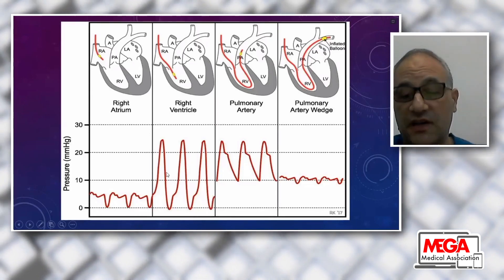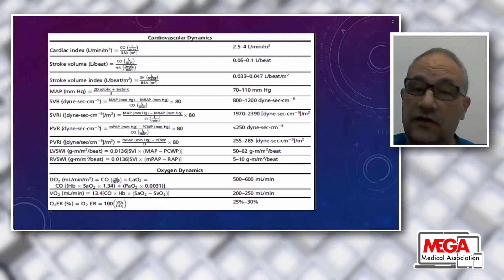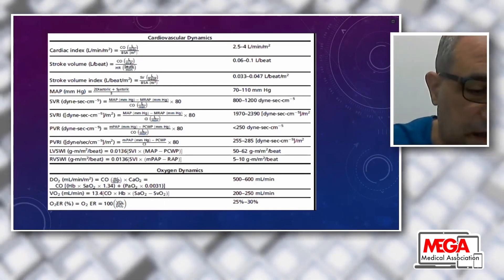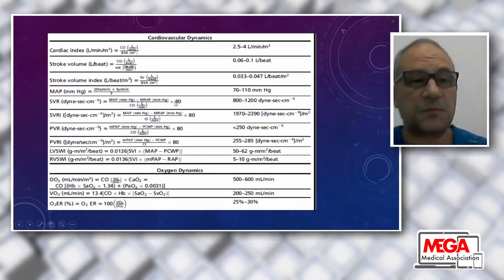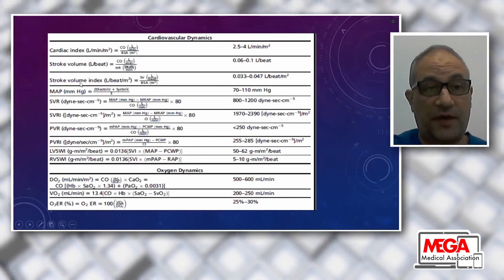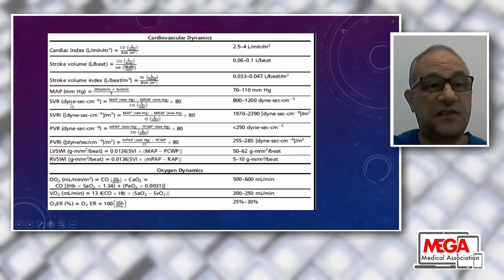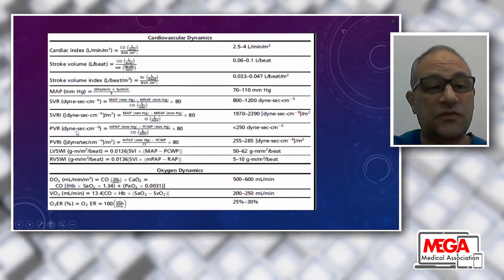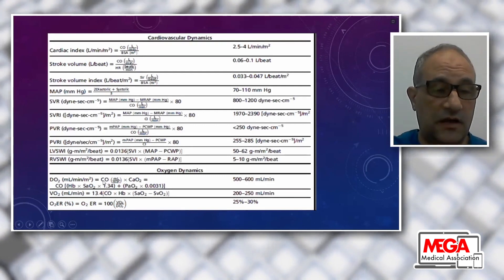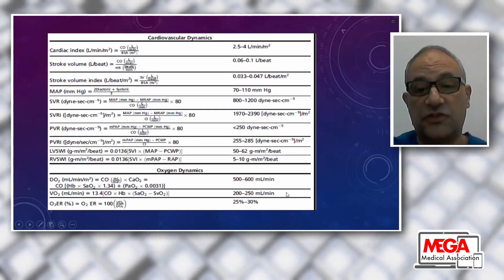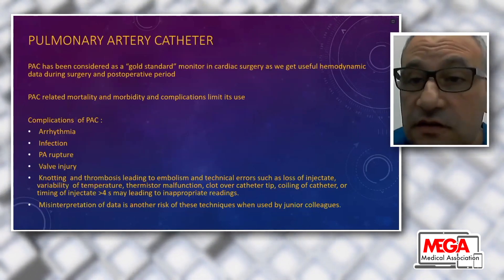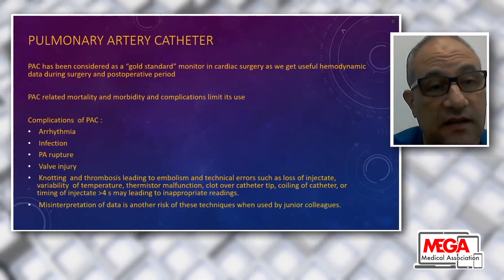The catheter can be inserted guided by pressure tracing, transesophageal echocardiography, or fluoroscopy—choose what is available in your center. From the pulmonary artery catheter I can obtain: cardiac output and cardiac index, stroke volume and stroke volume index, mean arterial pressure, systemic vascular resistance and index, pulmonary vascular resistance and index, left and right ventricular stroke work index, oxygen delivery, oxygen consumption, and oxygen extraction ratio. These oxygen parameters are very valuable and it is truly a gold standard providing continuous useful hemodynamic data during surgery and postoperatively.